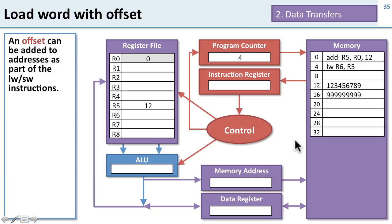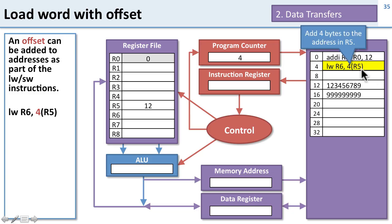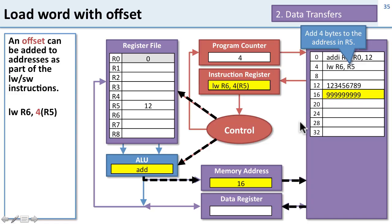We can also put offsets on memory instructions. For example, load word R6, 4(R5) — this says load at 4 bytes off from R5. Here's what that instruction looks like. Control tells the ALU to do an add: it adds the value in R5 and the immediate value 4 from the instruction, giving us 16. Then we go and access the memory at location 16, load the data into the data register, and finally write it back into the register file.